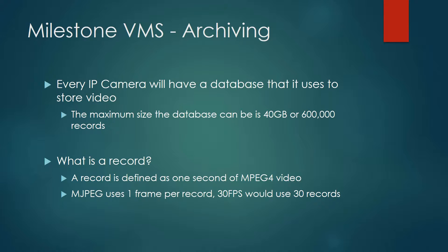Every IP camera will have a database that it uses to store video. The maximum size that database can be is 40 gigabytes or 600,000 records. A record is defined as one second of MPEG-4 video. If you've got an older camera that uses MJPEG, or you've set your newer camera to use MJPEG, every single frame will count as a record — so at 30 frames per second, you'd have 30 records compared to just one record for MPEG-4. You would not have nearly as much time in your live video folder before it would need to be archived.